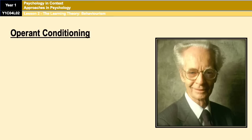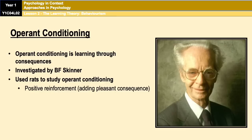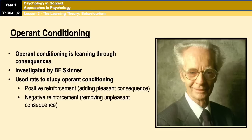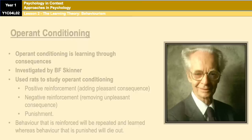Moving on, B.F. Skinner suggested that behaviour is a result of learning through consequences, and that is called operant conditioning. Skinner conducted research using rats and found three types of consequences that affect behaviour: positive reinforcement, which is adding a pleasant consequence; negative reinforcement, which is removing an unpleasant consequence — also a reward; and punishment, which is something bad. Behaviour that is reinforced will be repeated and learned, whereas behaviour that is punished will die out.